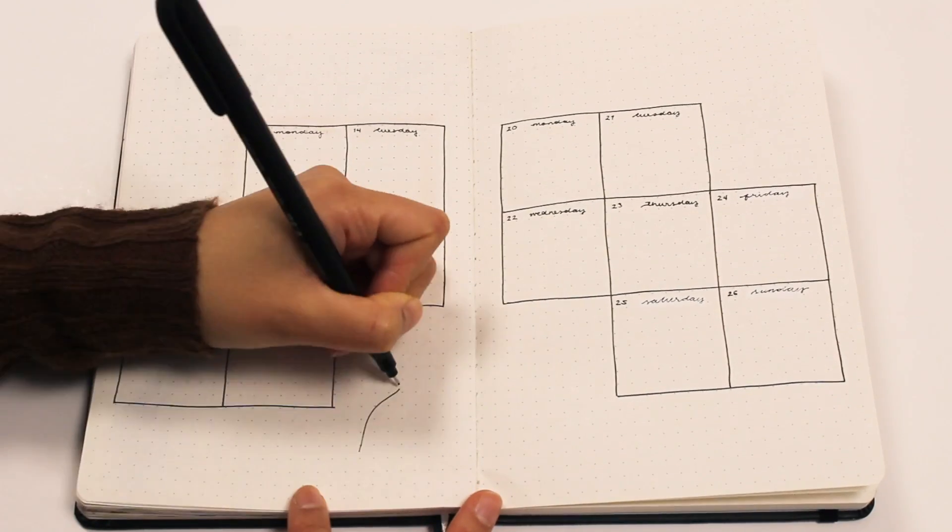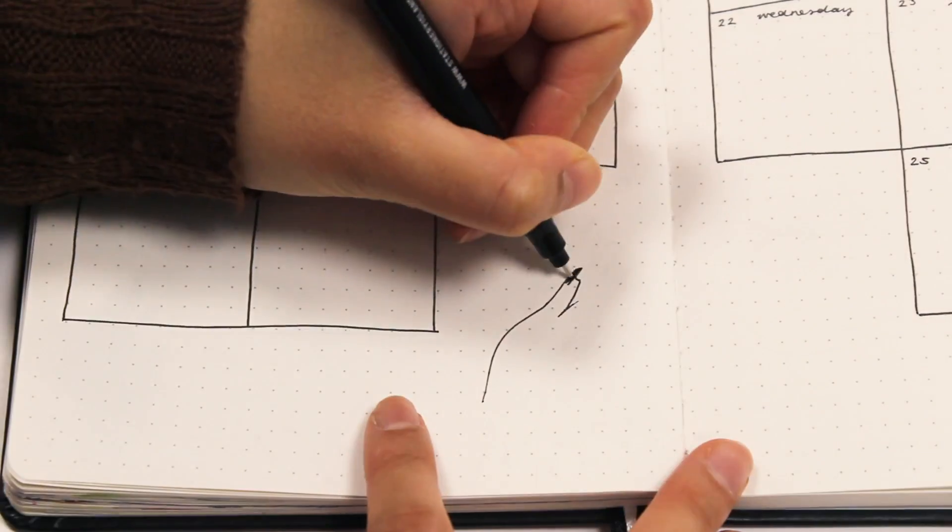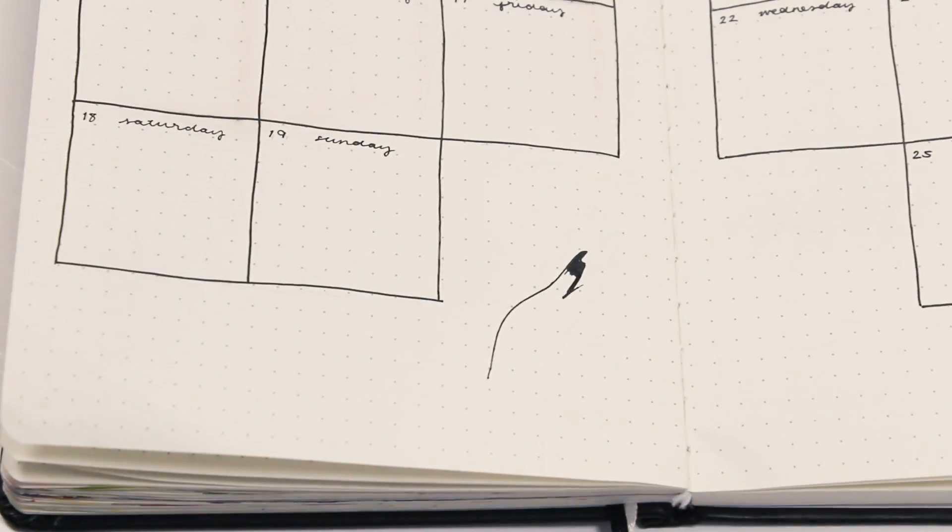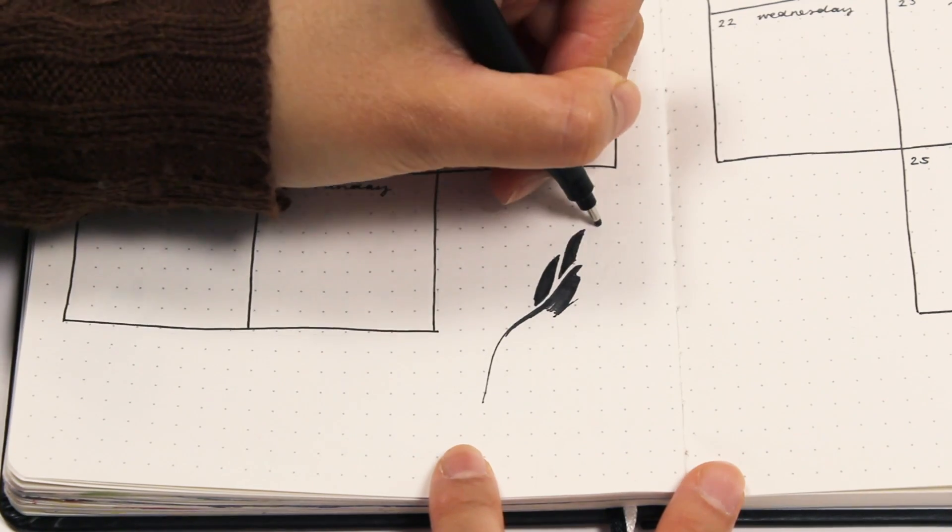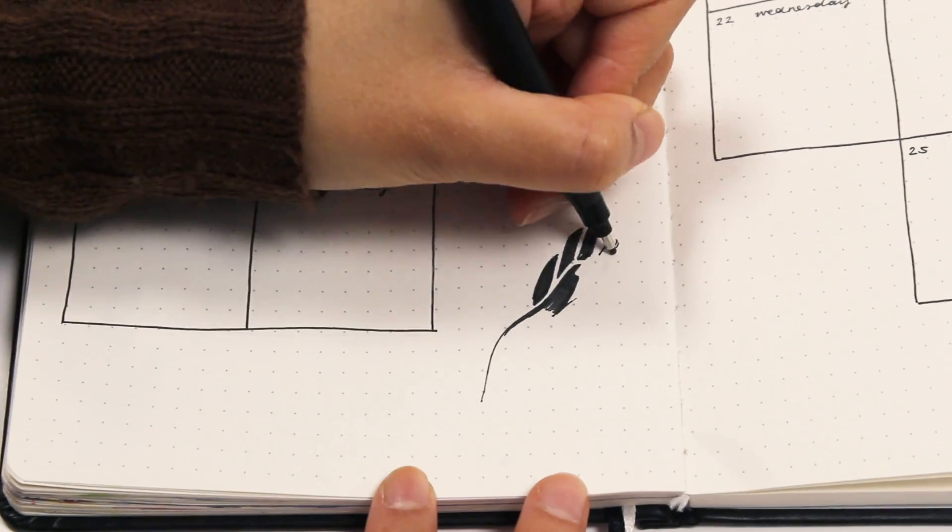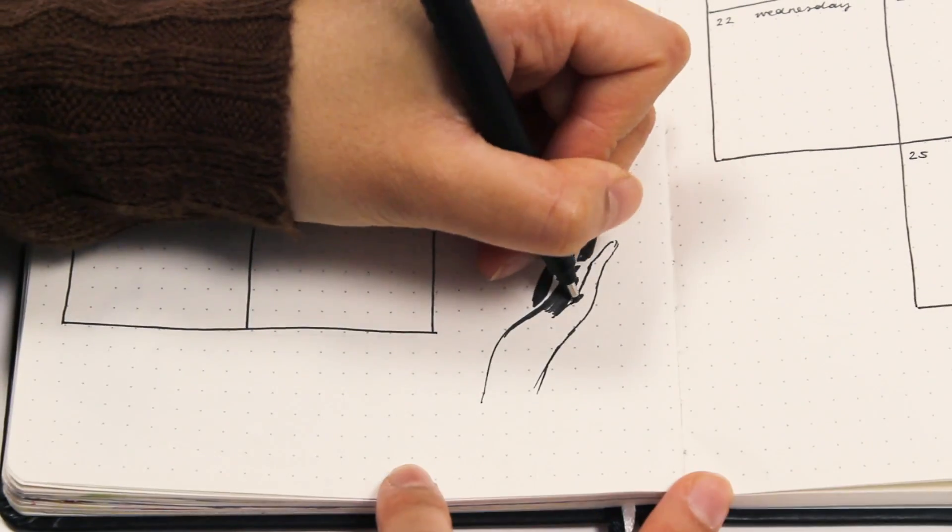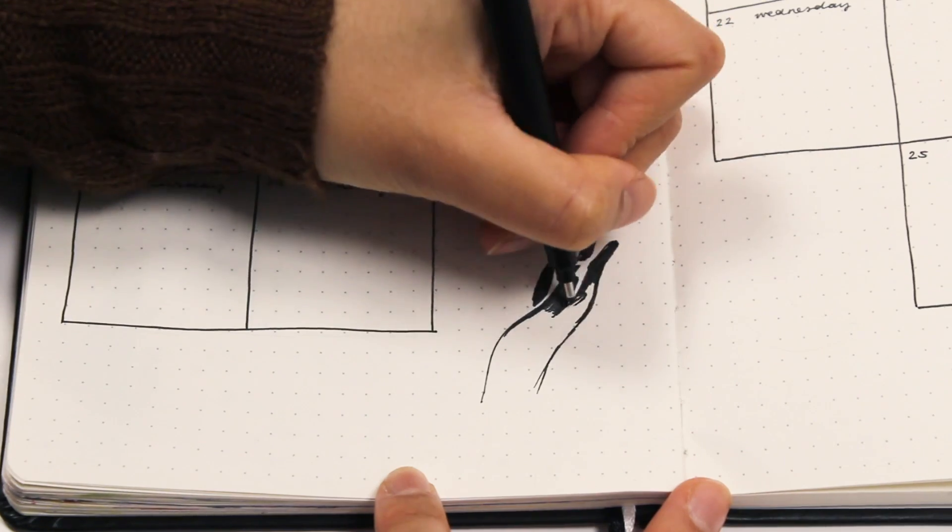Just in case you haven't seen my last planning with me video, my theme for this month is all things magic and I chose the colors black and gold and I really like it. So if you haven't seen it, please go watch it. I'll link it in the description box below. There's also a giveaway going on at the moment so you can enter that one if you're interested.